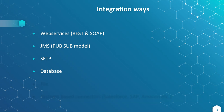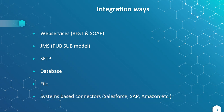Database: we can dump the data into a database table and provide those details to the receiver, so that they can interact with the database and get the data — that means integration happened. File: I can dump the data into a file and keep it in an SFTP location, so that the receiver can read the data from the SFTP location. Or we can fill the data into a file and send it over email. Last but not least, system-based connectors — integration tools provide system-based connectors to efficiently integrate with particular systems.